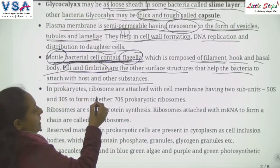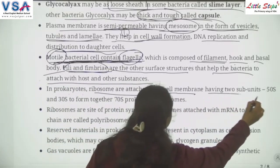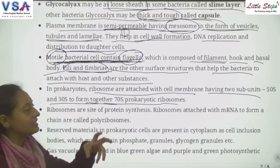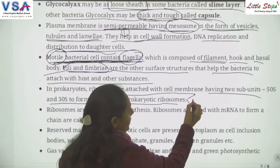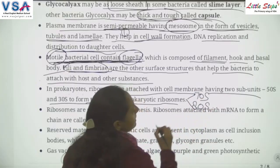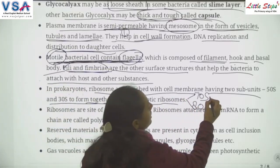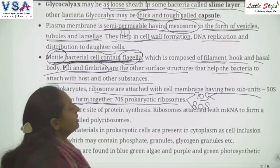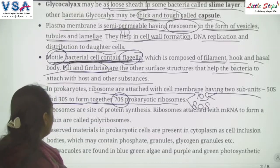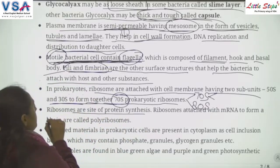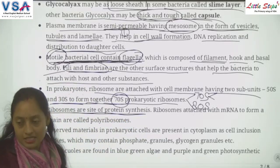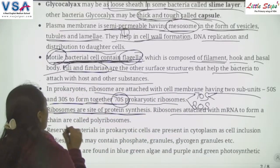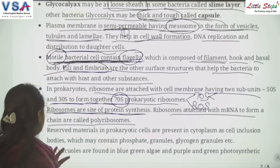In prokaryotic cells, ribosomes are attached to the cell membrane and have two subunits — 50S and 30S — which together form the 70S prokaryotic ribosome. Ribosomes are the site of protein synthesis. Ribosomes attach with messenger RNA to form a chain called polyribosome.